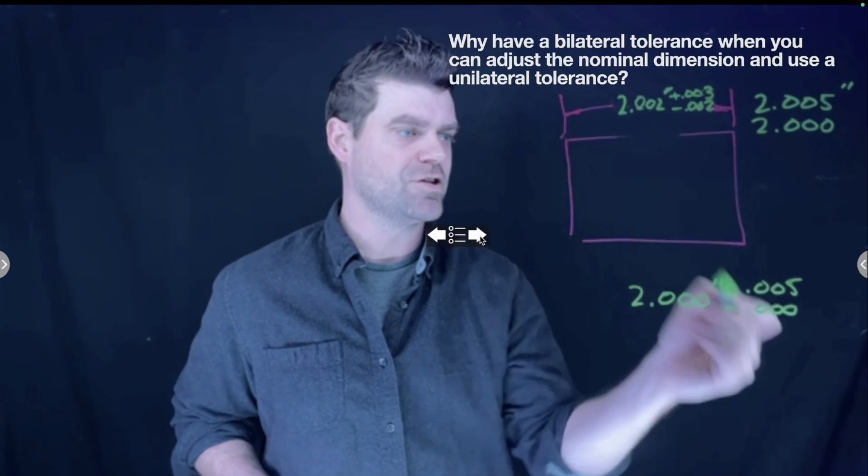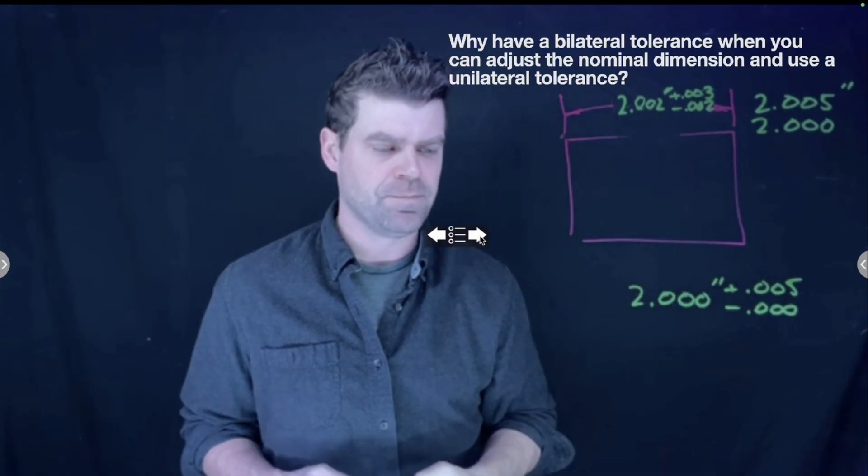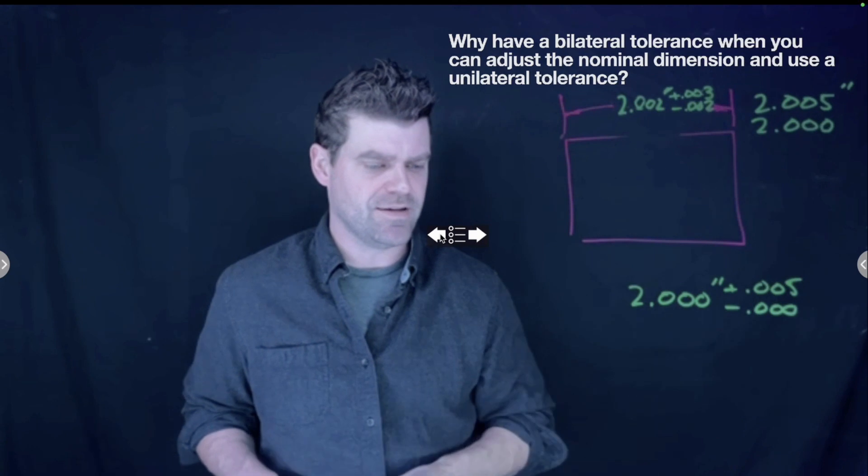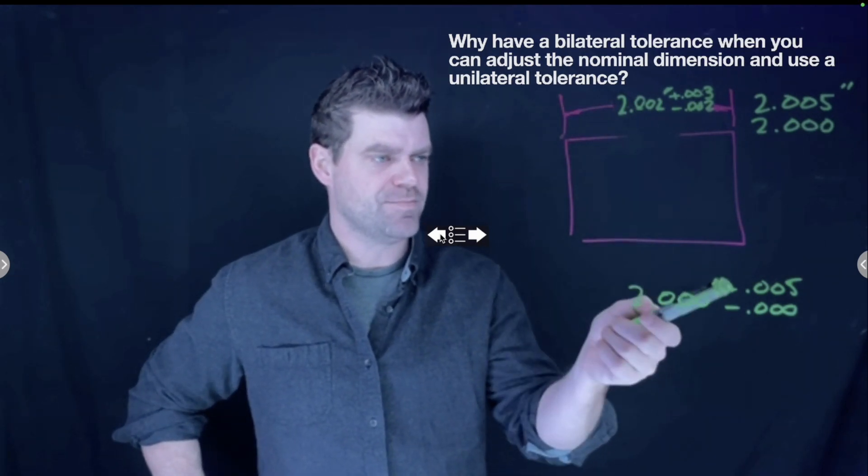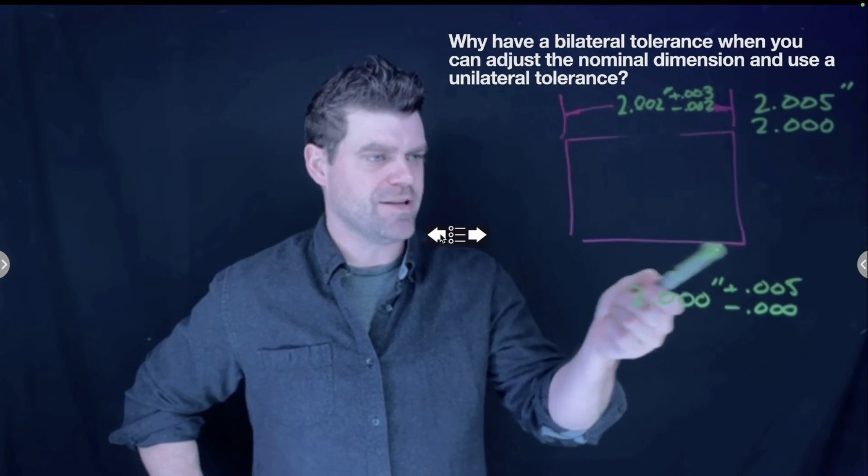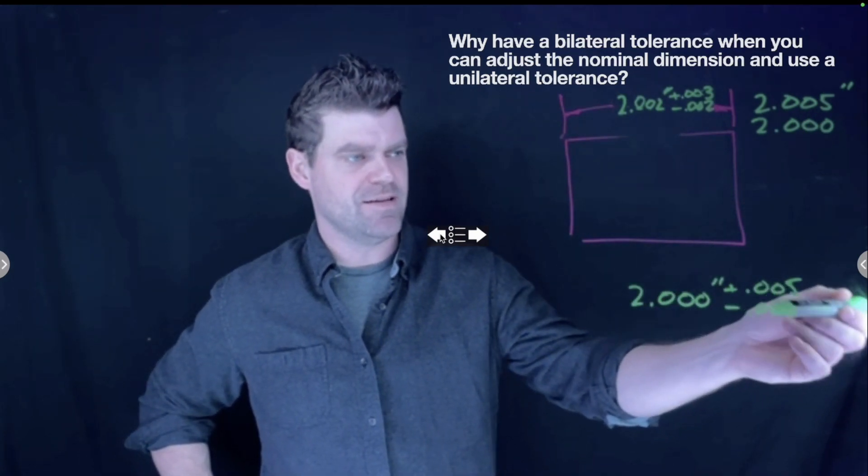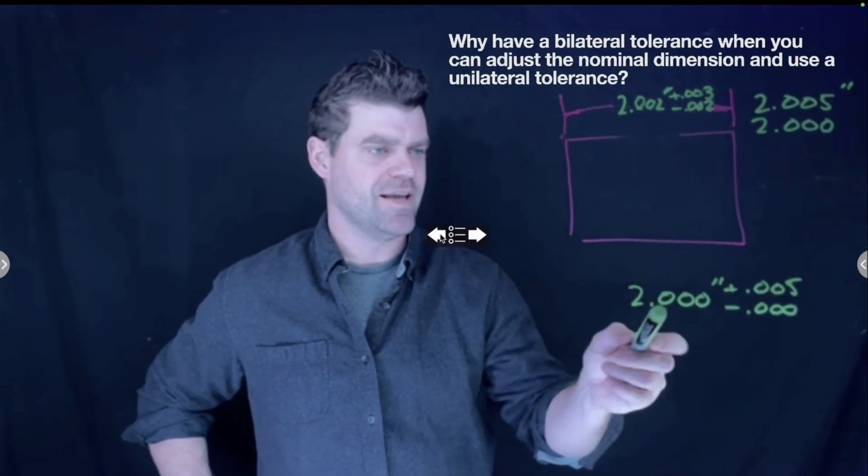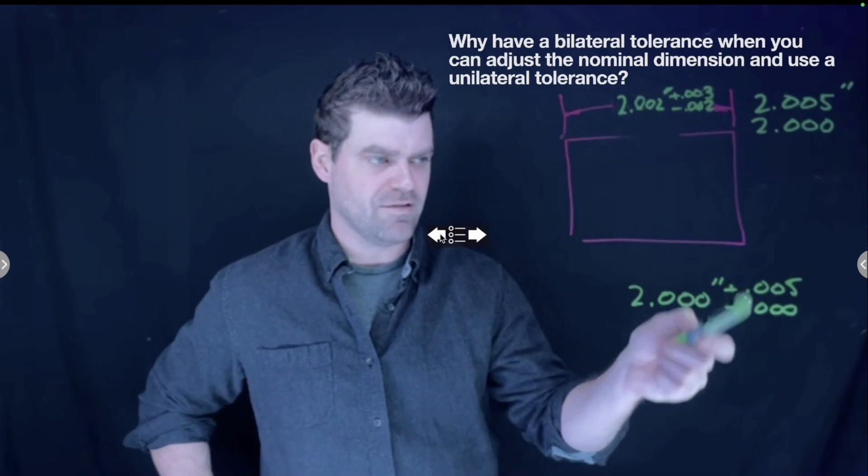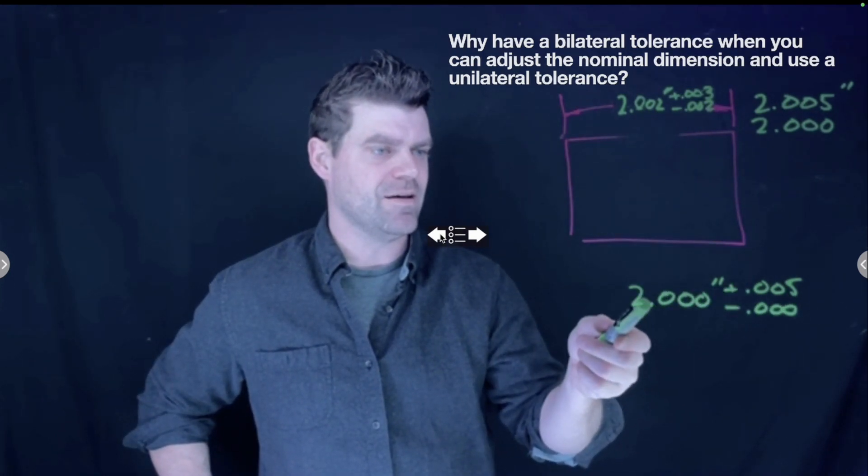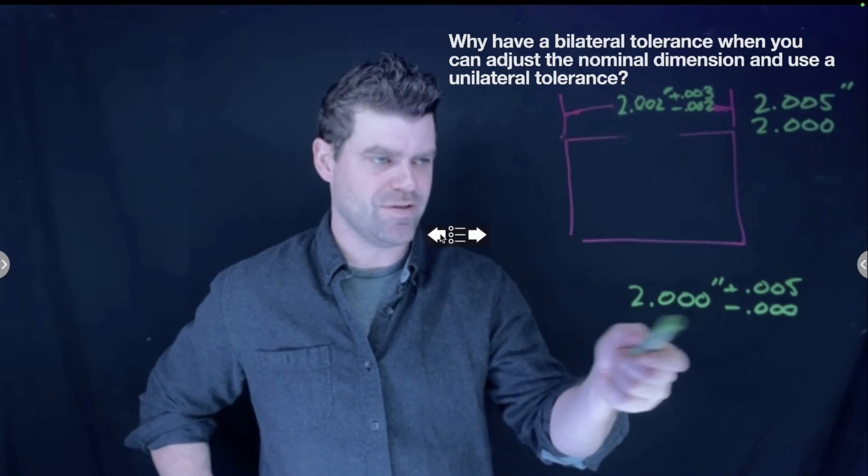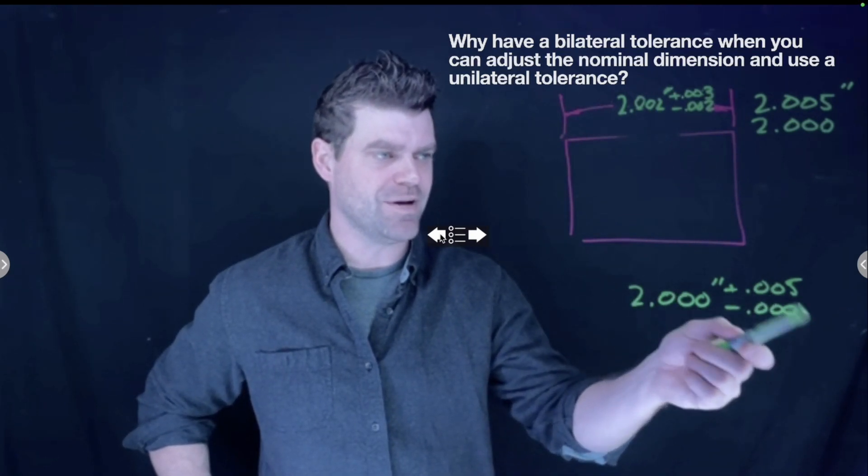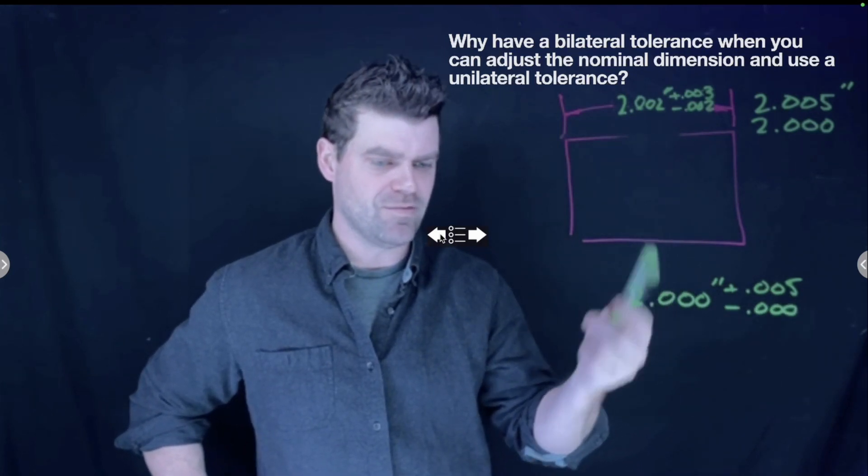So why do a bidirectional when you could do a unidirectional? And the answer is, when you set your nominal dimension and you specify which direction that it can be deviated from, positive or negative, in a unilateral configuration, it means that the manufacturer is going to shoot to make it two inches. That's where their goal is. They're trying to make it two inches, but if they go over it, that's all right.